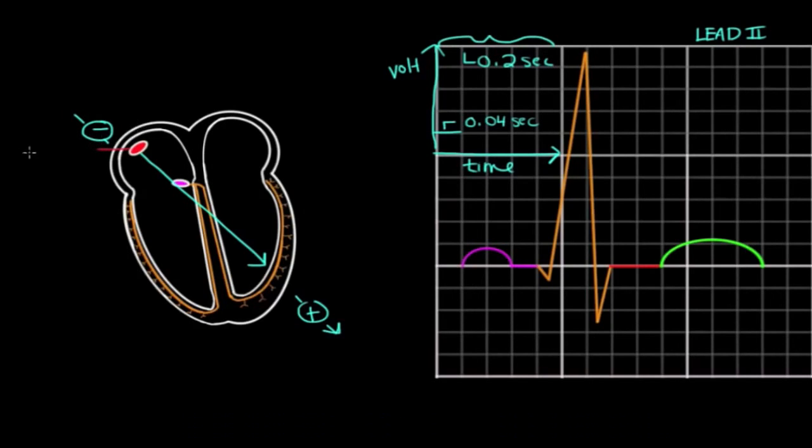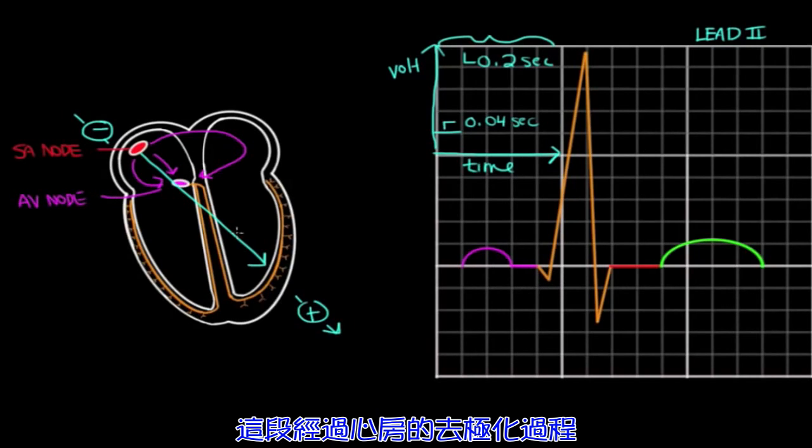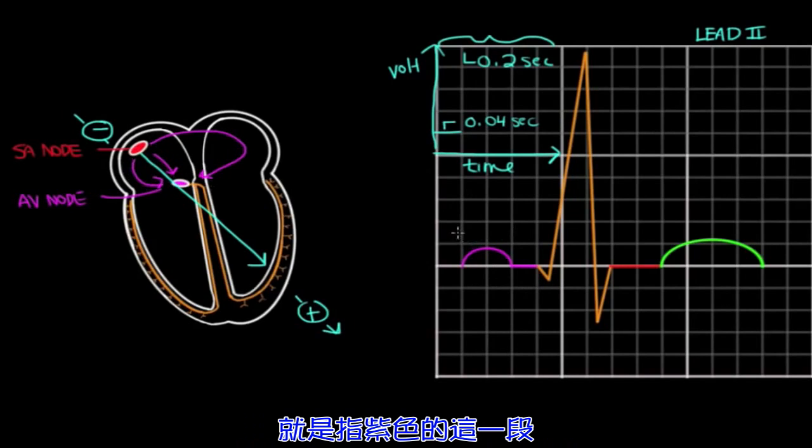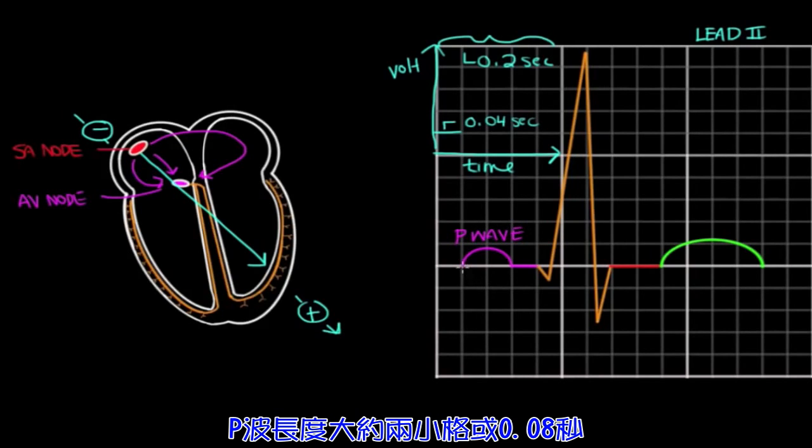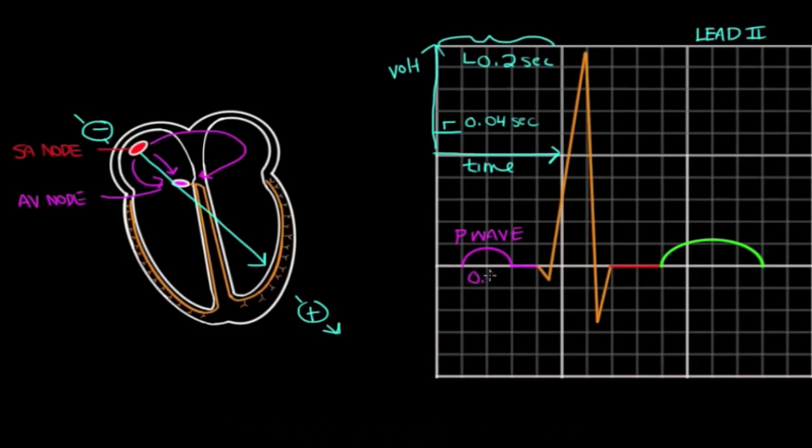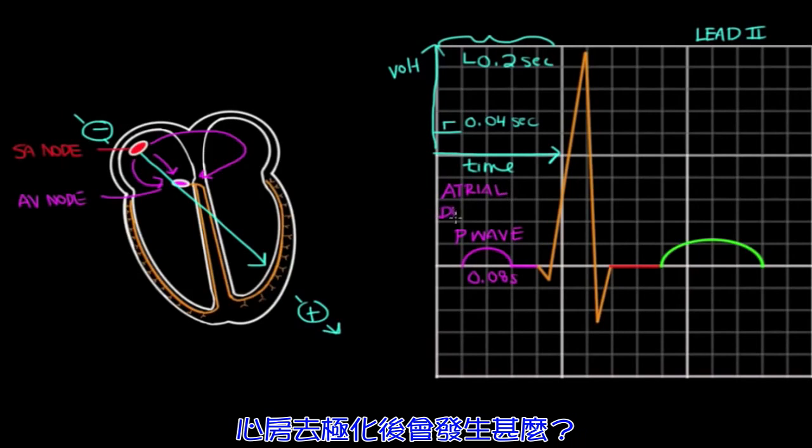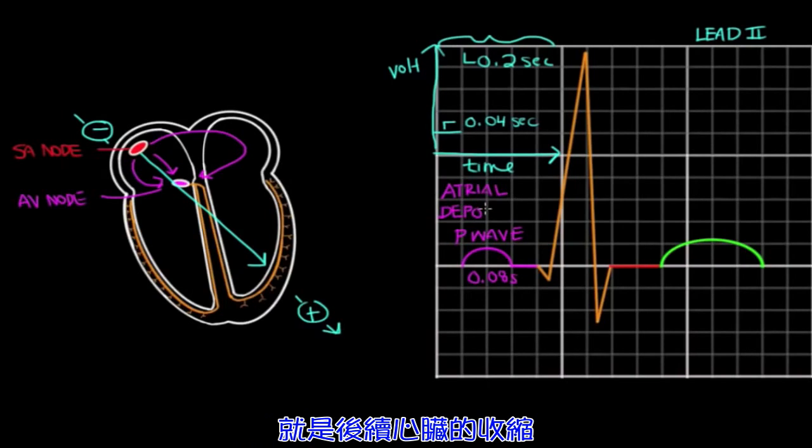Conduction starts at the heart's dominant pacemaker, the SA node. The SA node initiates waves of depolarization that run through the atria and go to the AV node. And on EKG, this depolarization through the atria is seen as this purple wave here called the P wave. The P wave is usually about 2 small boxes or 0.08 seconds. And again, the P wave represents atrial depolarization. And what happens after the atria depolarize? Well, you get subsequent contraction.